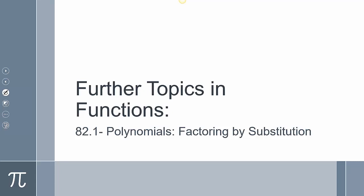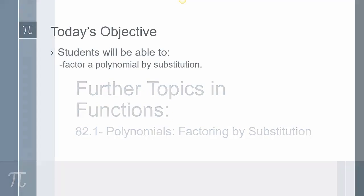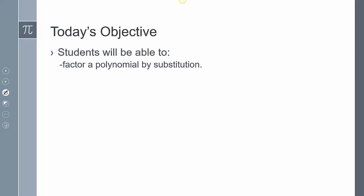Today is going to be 82-1. We're going to take a look at polynomials, which is a type of function. It's not really specific just to polynomials, but you're going to see a lot of polynomials here. We're going to be factoring by substitution, and you're going to be able to factor a polynomial or other types of equations by this concept of substitution.